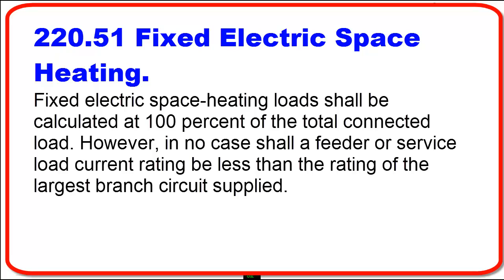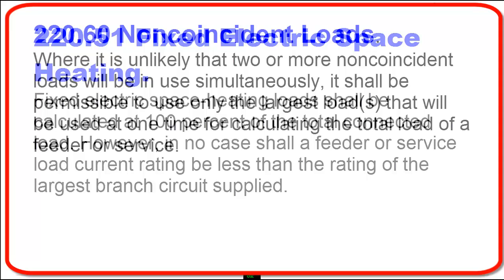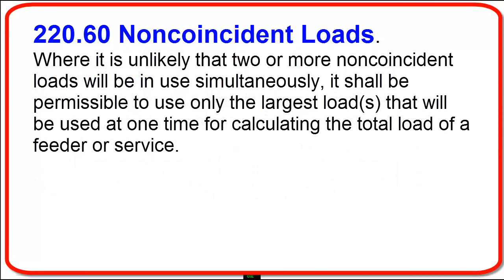So what if I have electric heat and AC together? Do I need to take both of them? The answer to that is no. And if you look at Article 220.60, non-coincident loads, it states where it is unlikely that two or more non-coincident loads will be in use simultaneously, it shall be permissible to use only the largest load that will be used at one time for calculating the total load of a feeder or service. So we are at heat versus AC. In this calculation, we are going to have a gas furnace with a 3 horsepower AC unit. So if we are doing heat versus AC here, it is going to be the AC.